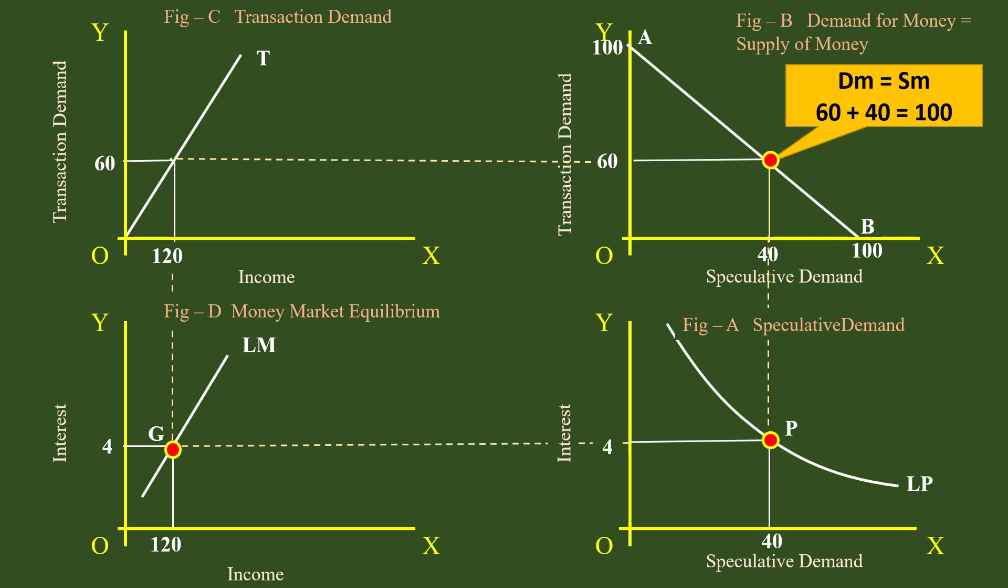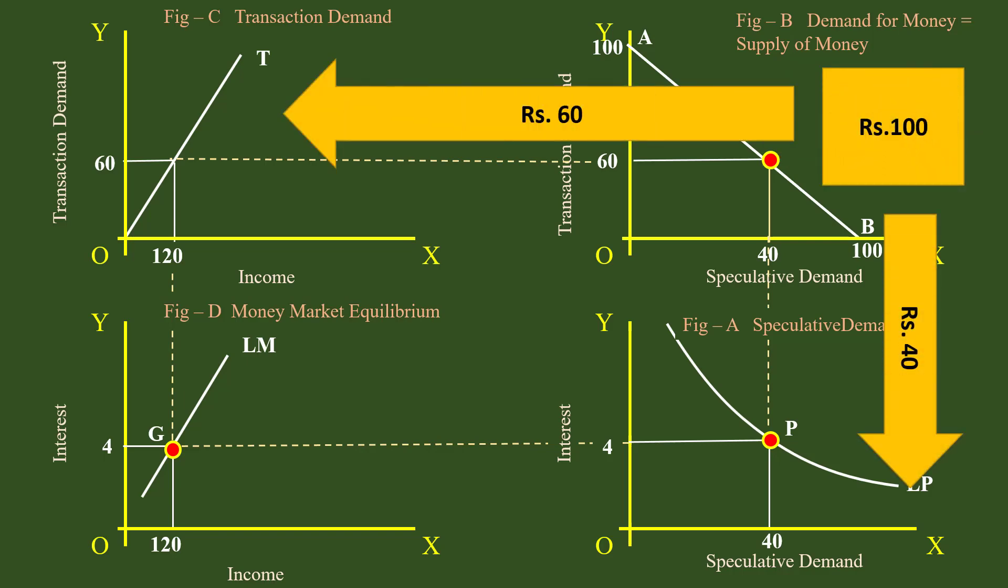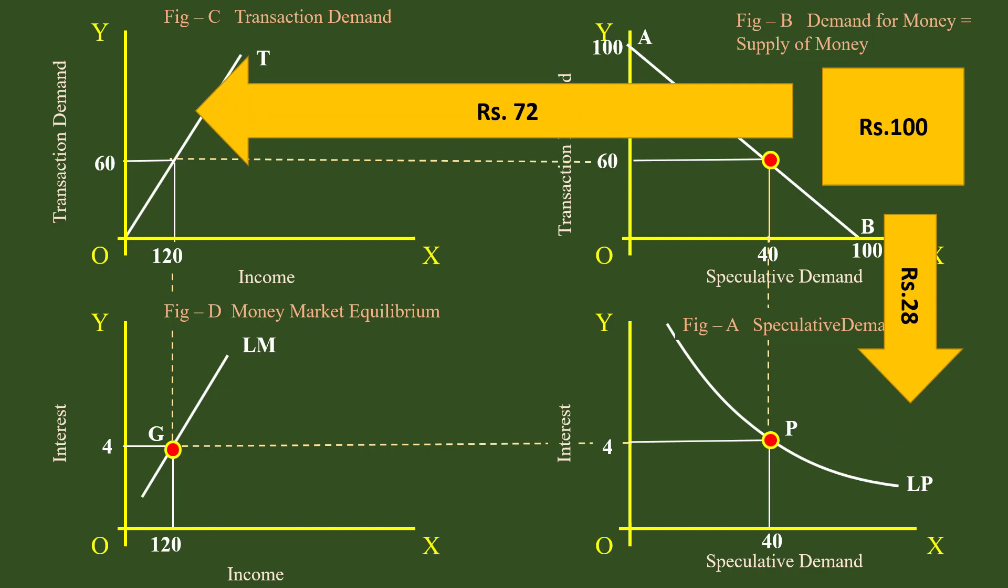What is to be kept in our mind here is, the total money supply is diverted between transaction motive and speculative motive. If transaction motive demands more money, the speculative motive must divert that amount. For one reason or another, if transaction motive demands less money, the speculative motive must be in a position to absorb the surplus amount. Thus, total money is distributed among these two motives. With this understanding, we shall proceed further.